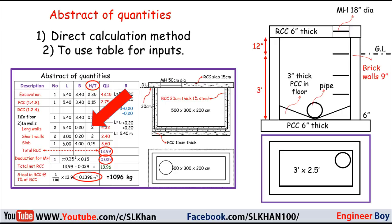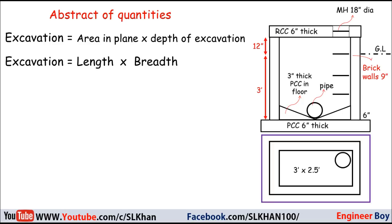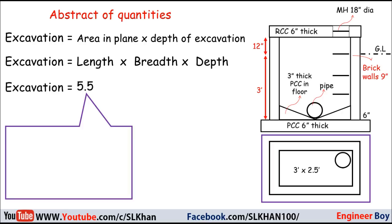The first thing to calculate is excavation, which is the plan area times the depth of excavation. Since the manhole plan is a rectangle, excavation equals length × breadth × depth — basically the volume of a rectangular prism. The length should be 5.5 feet.